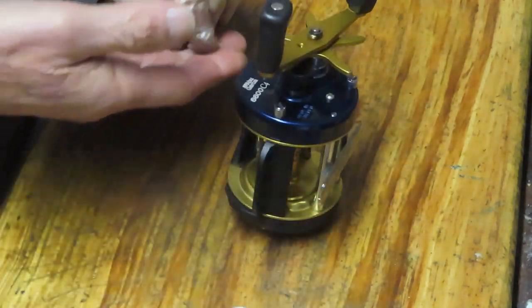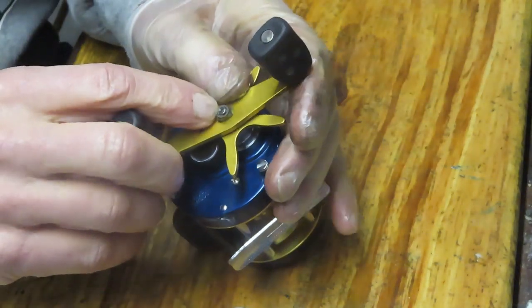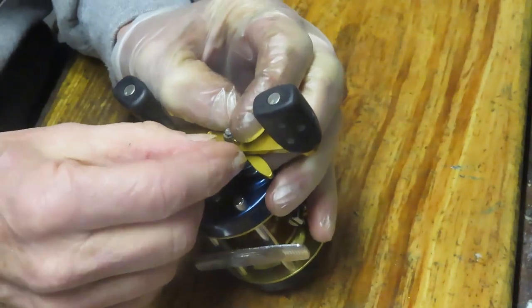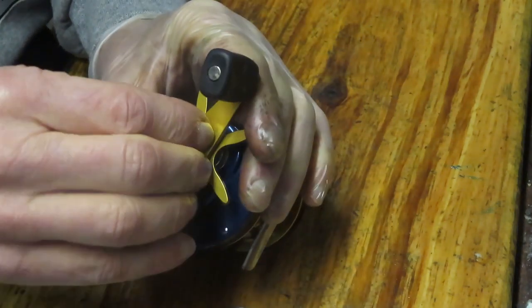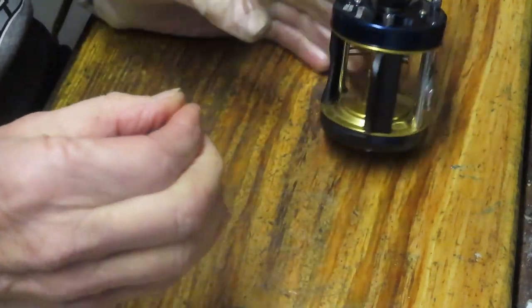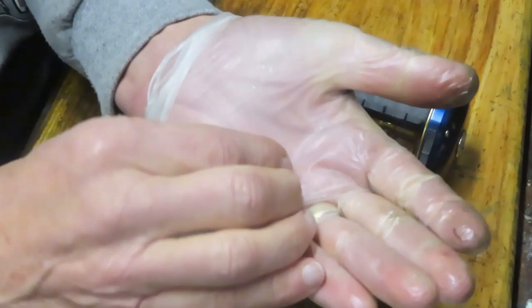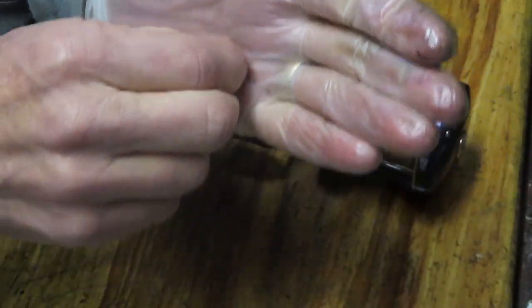We just took off the handle nut cap and that's going to expose a little e-clip here and you need to remove that e-clip in order to remove your handle. Usually you can do that with finger strength. If you can't use the pliers, always be careful. These kind of have a little bit of a spring to them and if you aren't careful, that little clip is going to fly away.